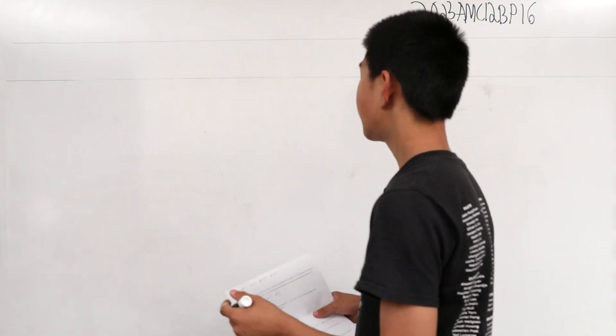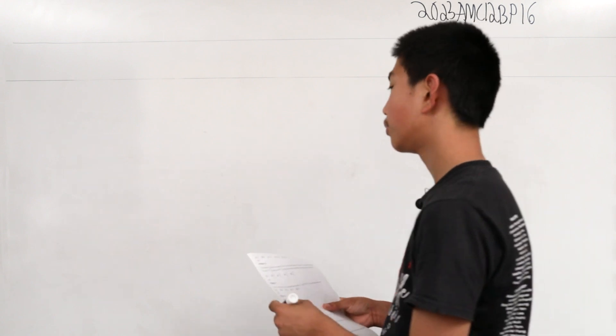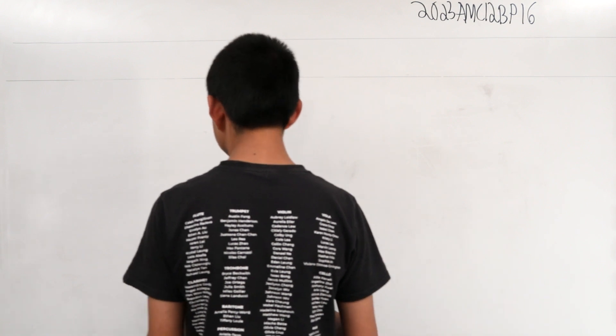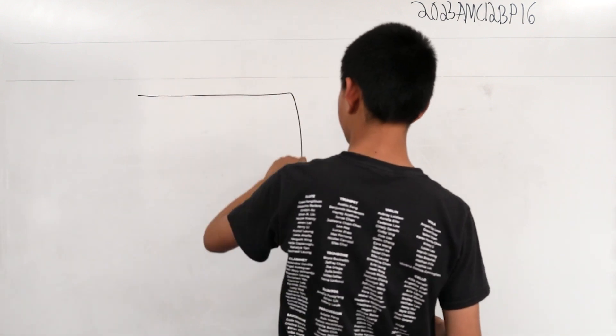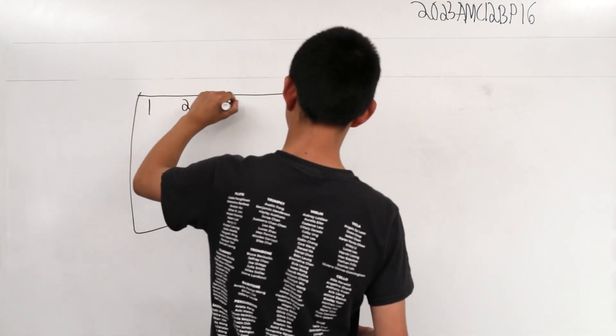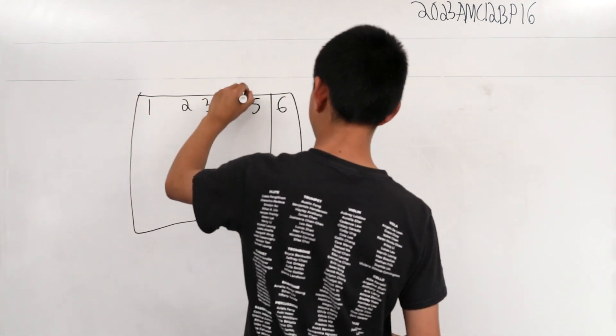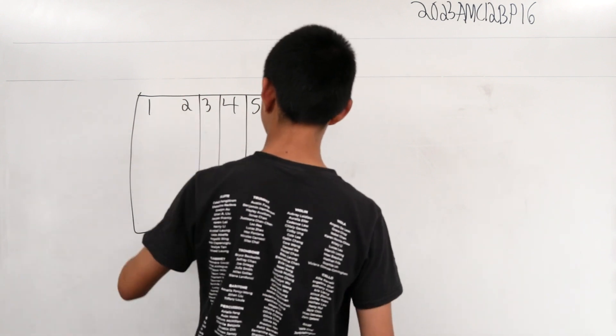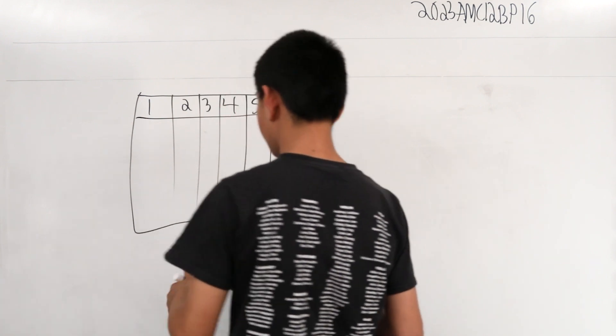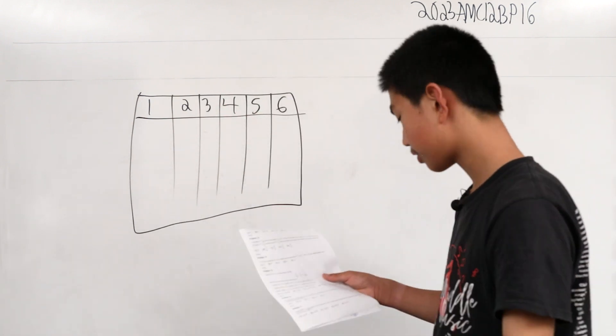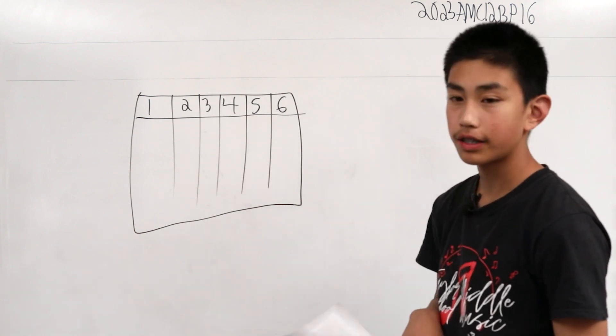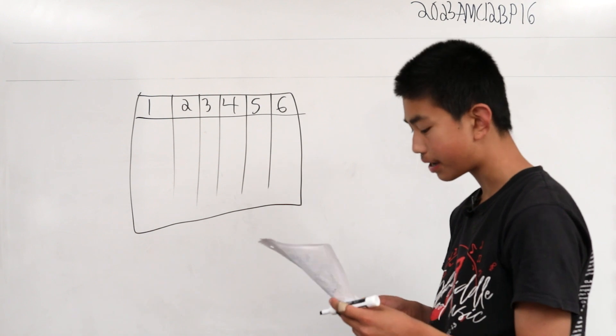Let's make a chart with columns 1 to 6. We'll draw rows for numbers 1, 2, 3, 4, 5, and 6. Now let's shade in a box if the number can be made with our coins.